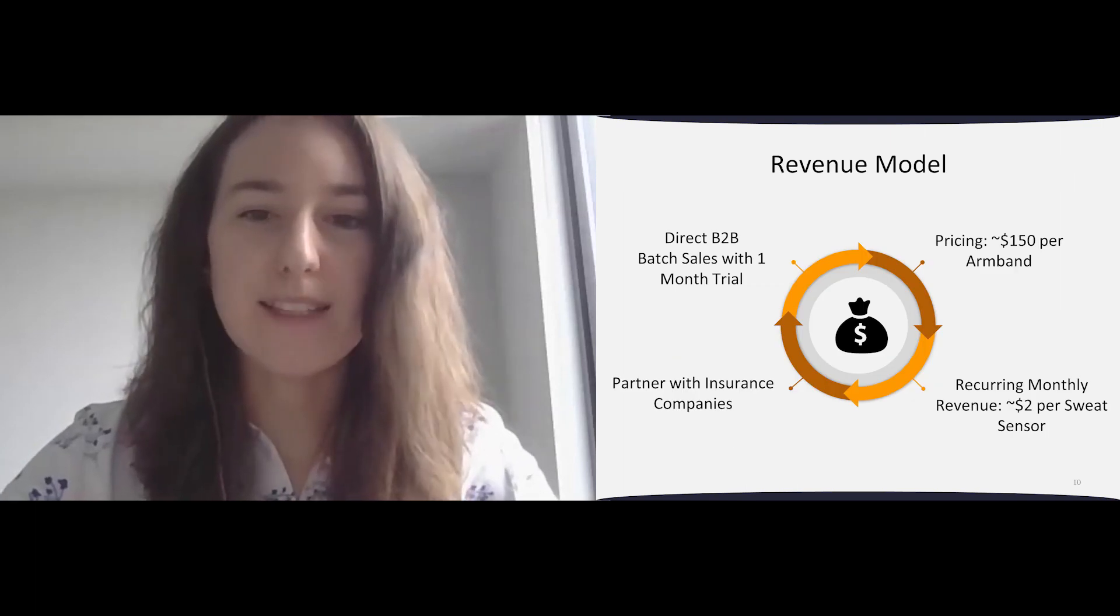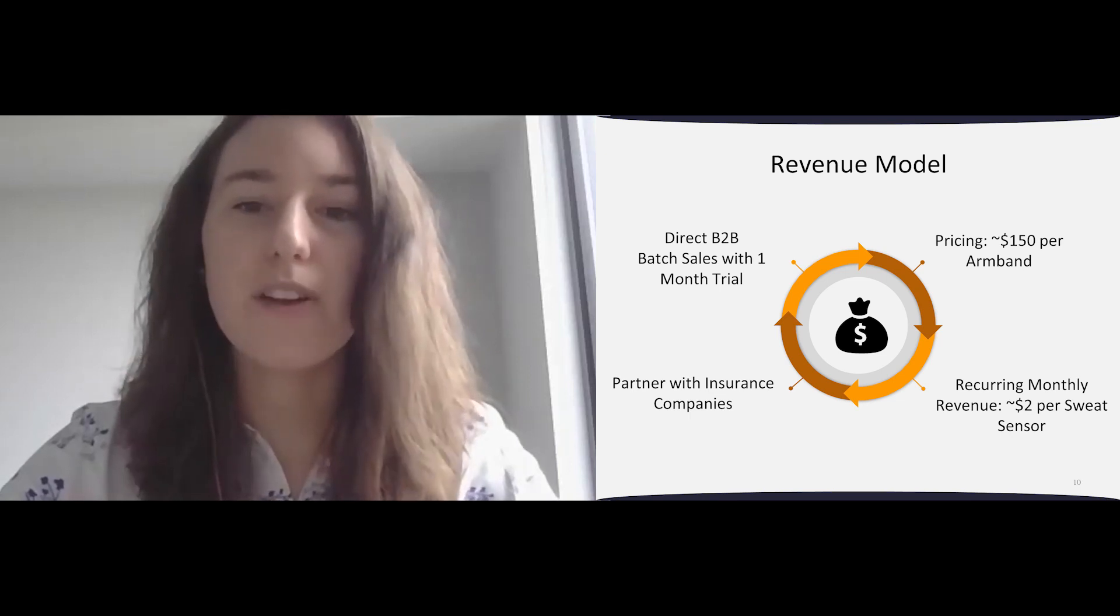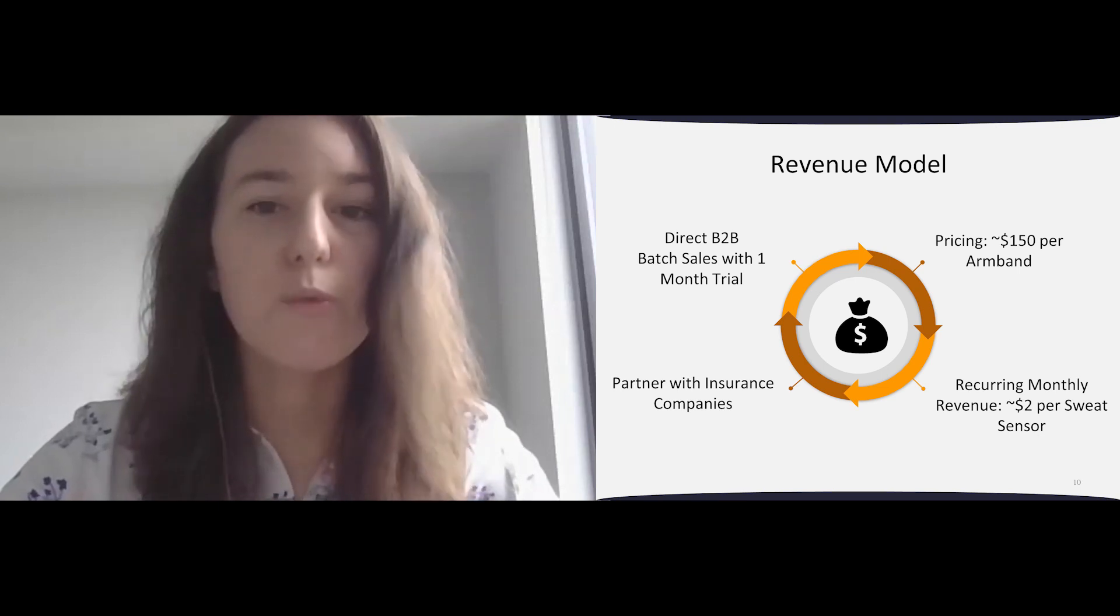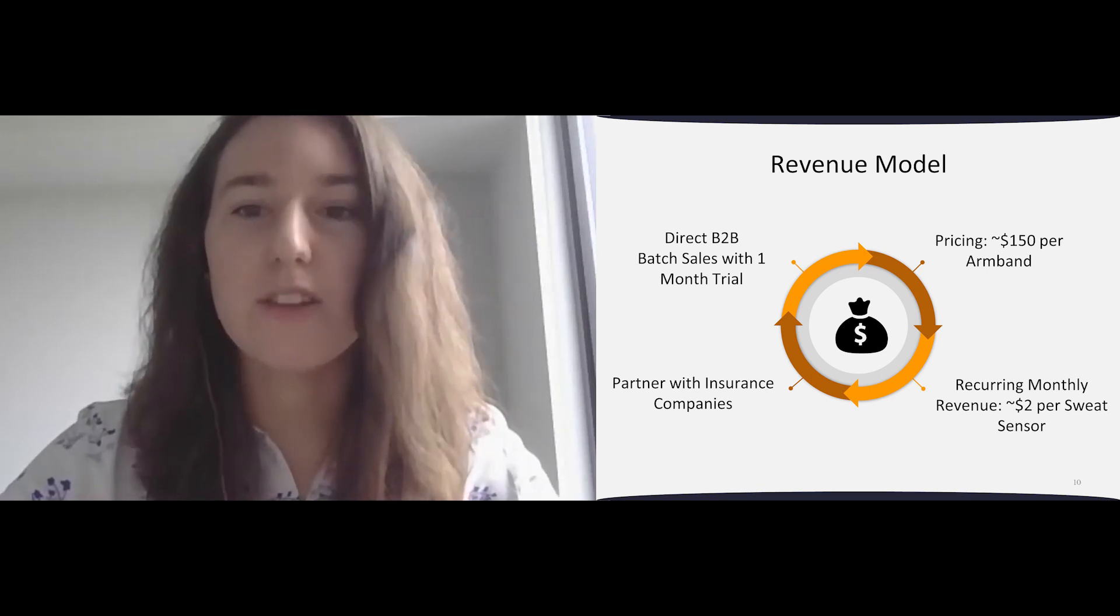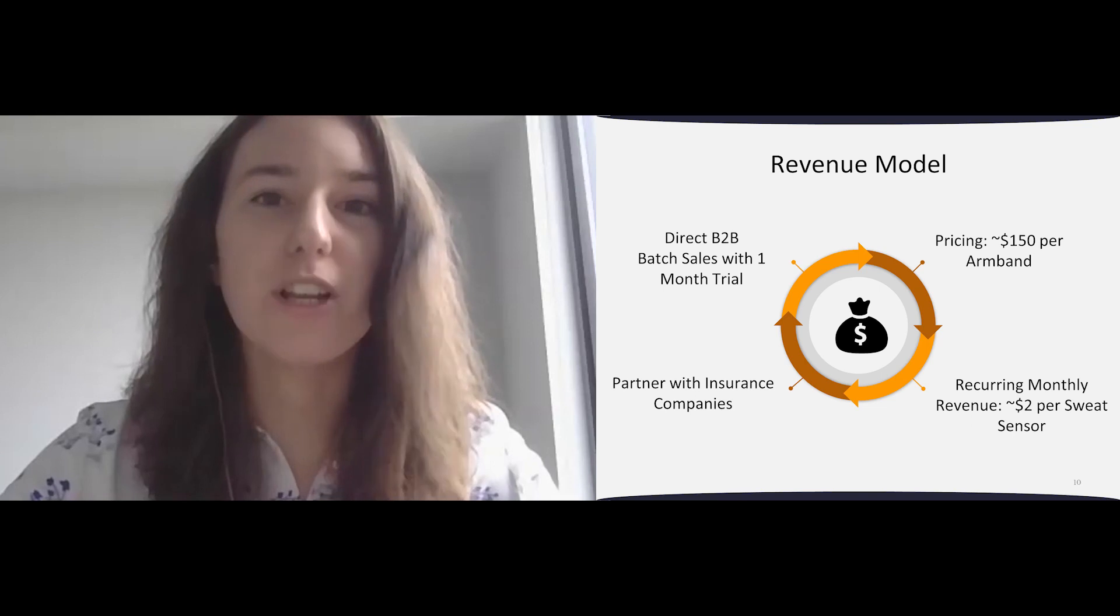We'll be selling our armbands in direct B2B sales with a one-month trial period for customers. Our pricing is around $150 per armband, and we'll have discounts for larger batch sales. We will also collect recurring monthly income from sweat sensor sales at $2 per sensor. We're setting up partnerships with insurance companies who want to lower their medical expenses to incentivize employers to buy the No Stroke armbands in exchange for lower insurance premiums.